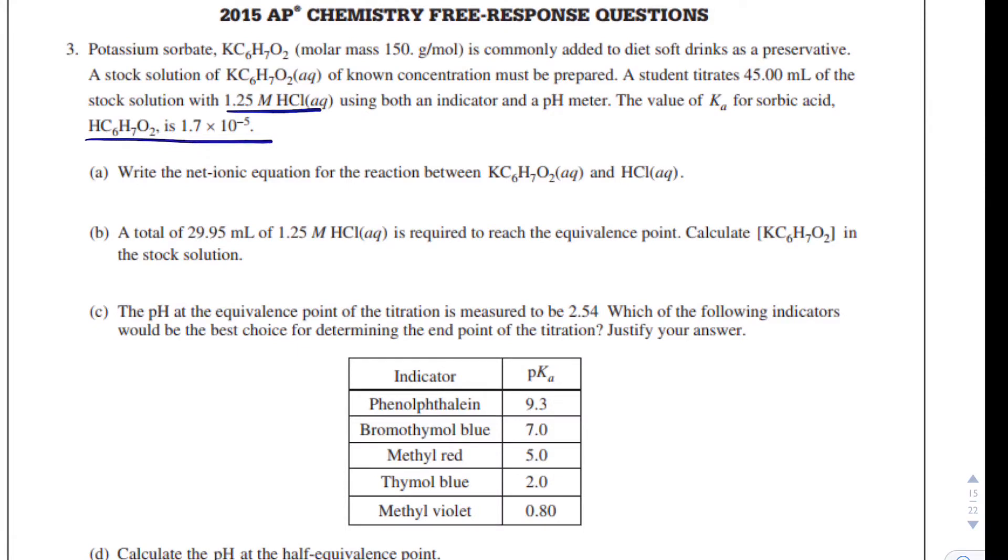So here they say write the net ionic equation between KC6H7O2 and HCl. Okay, so we have KC6H7O2 plus HCl, and we're going to get KCl plus HC6H7O2. And this sorbate is just a complicated polyatomic ion.